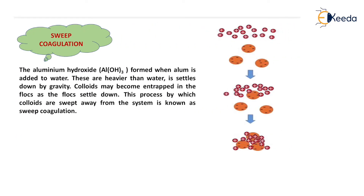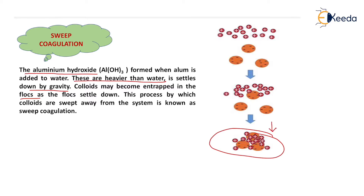The next mechanism is sweep coagulation. The aluminium hydroxide which is formed when coagulant alum is added in water is heavier than water and settles by gravity. When we add alum in the water it forms a sticky gelatinous substance. When this sticky gelatinous substance comes in contact with colloids, it creates charge neutralization. When charge neutralization takes place, all the particles come in contact with each other, grow in size, and settle down at the bottom of the tank. This is known as floc formation and the settlement is known as floc settlement. In this process all the colloids are swept away from the system, that is why it is known as sweep coagulation.